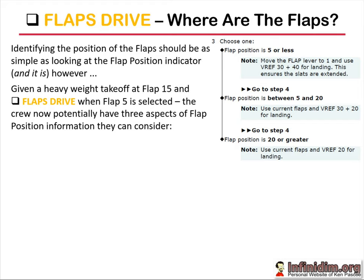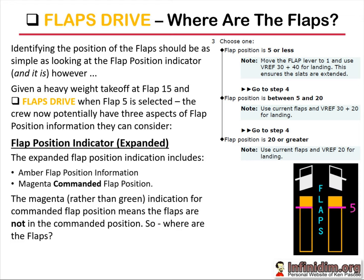Let's look at the ICAS flap indication. The expanded flap indicator gives several pieces of information. We have the flap position indication, which is currently amber in keeping with the non-normal, and we have the magenta commanded indication. The fact that it's magenta indicates that while flap 5 is commanded by the flap lever, either the flaps are not actually at 5, or the FSEU can't confirm they're at 5. All we really know is that the command indication is not green, despite the fact that the amber position indication seems to indicate that they are. So where are the flaps?